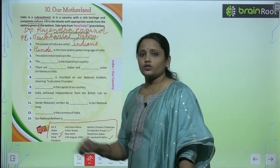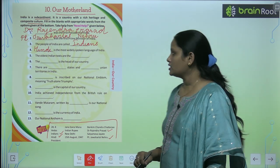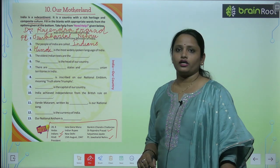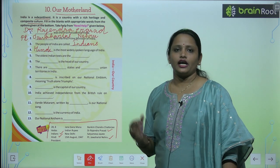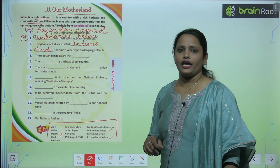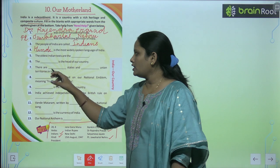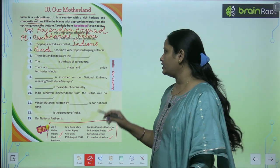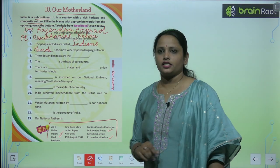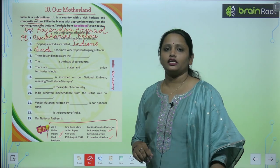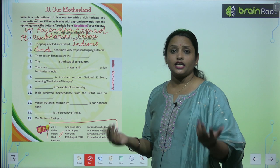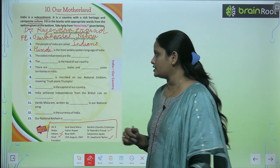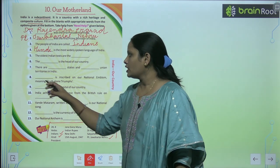The sixth question says: 'The Dash is the head of the country.' Who is the head of the country? Next: 'There are Dash states and Dash union territories in India.' How many states and how many union territories are there in India?